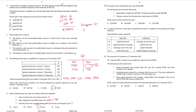Question 10. A business had a draft profit of $250,000. Errors discovered: depreciation was charged at $25,000 but should have been $40,000 — so $15,000 extra must be subtracted. Closing inventory was undervalued by $10,000 — correcting this increases profit because higher closing inventory reduces cost of sales and increases gross profit, so we add $10,000. Correct option is 10B.